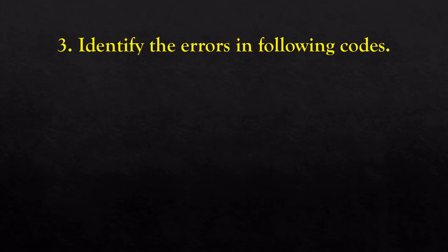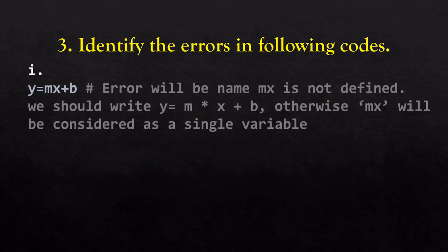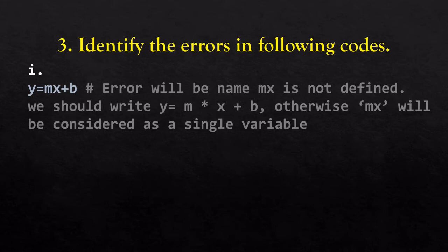Question three: identify the errors in the following code. The first code is y = mx + b. Here mx is not defined. Also, mx means m into x, but when you write mx in a program it is considered as a single variable, not m multiplied by x. So you have to specify the multiplication operator and write y = m * x + b. The values of m, x, and b should also be defined.